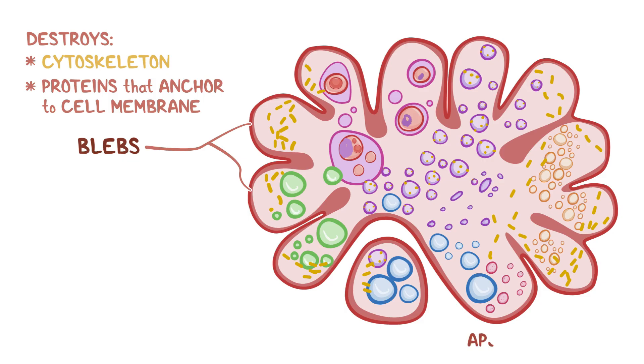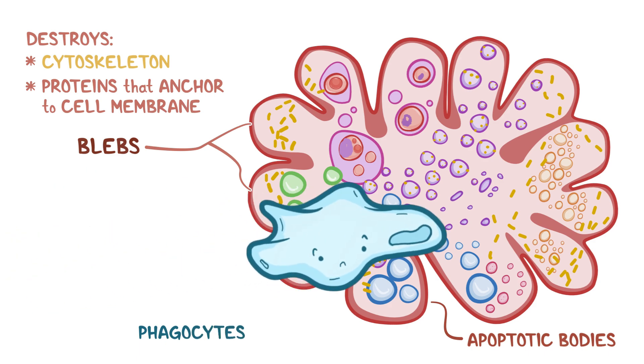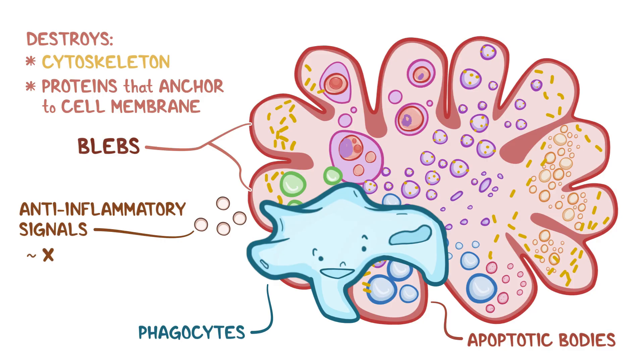Eventually forming small apoptotic bodies that are eaten by neighboring phagocytes. At the same time, the apoptotic cell releases anti-inflammatory signals, thereby preventing the recruitment of other immune cells from the blood and preventing tissue inflammation. So apoptosis is a neat process that conveniently recycles the organic contents of the dead cell.